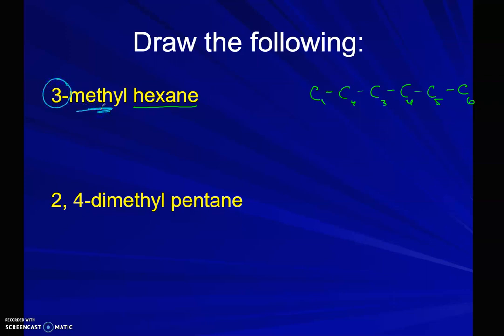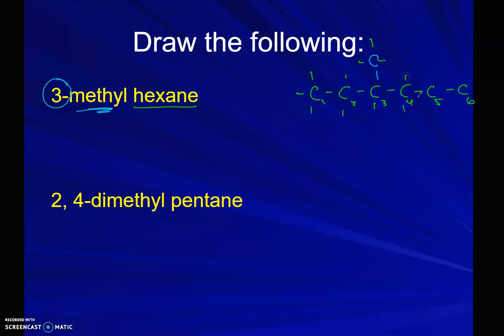On the third carbon, we're going to put a methyl group — 1, 2, 3 — I'm going to put a methyl group there. Then you can fill in your hydrogens. Counting them out, we get 16 hydrogens total, so this is going to be C7H16.